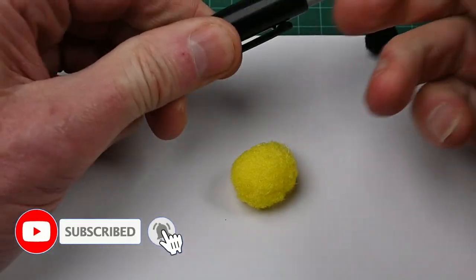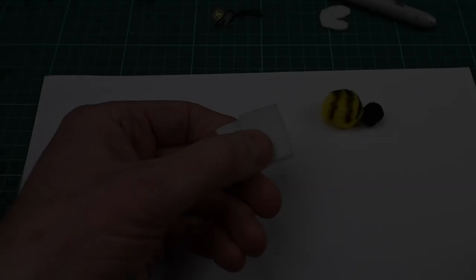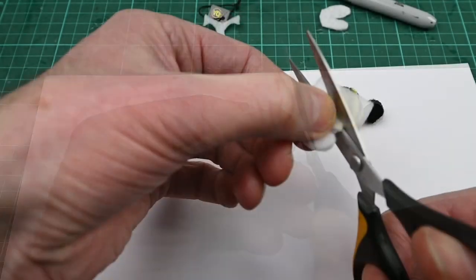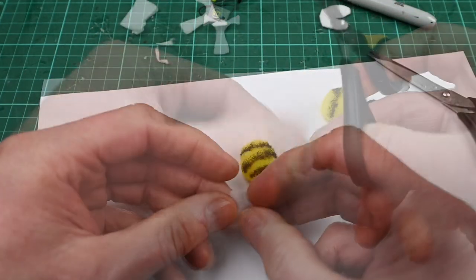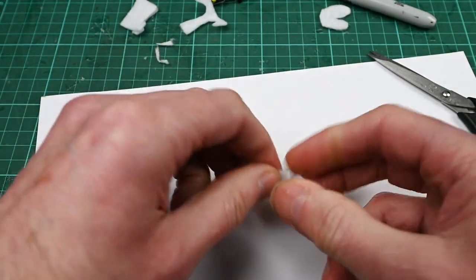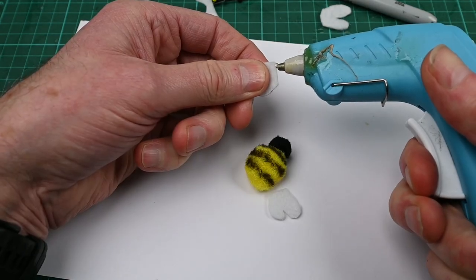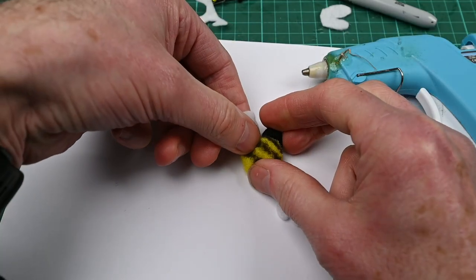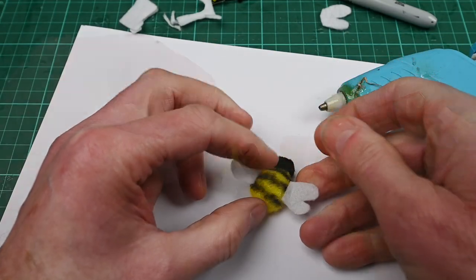So I started with a yellow pom-pom and added stripes with a Sharpie pen. Then I cut out two pairs of wings from white felt, and there they are, just the right size.